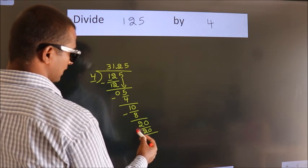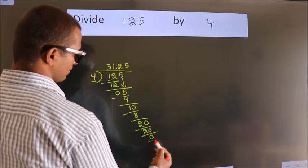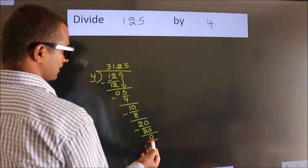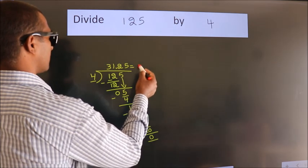Now we subtract. We get 0. We got remainder 0. So this is our quotient.